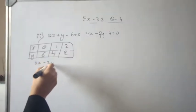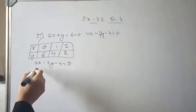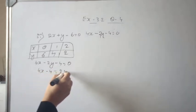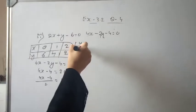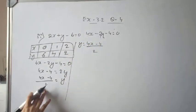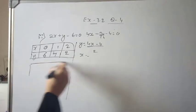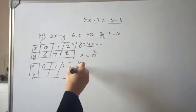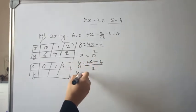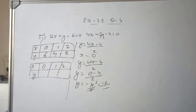For the second equation 4x minus 2y minus 4 is equal to 0, rearranging gives y is equal to 4x minus 4 divided by 2. When x is equal to 0, y is equal to minus 4 by 2, so y is equal to minus 2. When x is equal to 1, y is equal to 4 minus 4 divided by 2, so y is equal to 0.